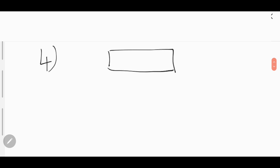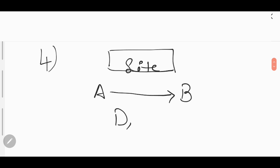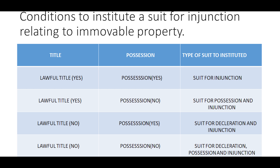Now let's look into the fourth condition. Mr. A says he is the owner of the property or the site. But Mr. B says he has a lawful title and is in possession of the property for a very long time. Then in this case, Mr. A can institute a suit for declaration, possession, and injunction against B. In other words, any person who has a defective title and is not in possession of the property has to institute a suit for declaration, possession, and injunction against that person.